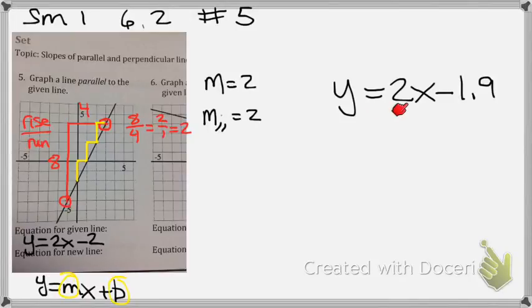My slope has got to be the same, but my y-intercept has to be different. If my y-intercept was the same number, it would just end up being the same exact line. So I have to make sure my y-intercept, or b, is different.